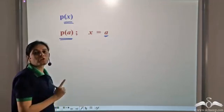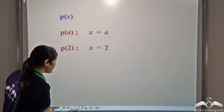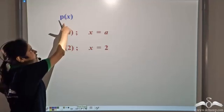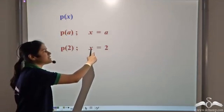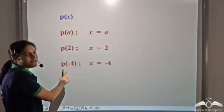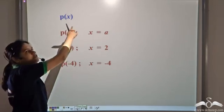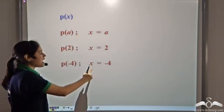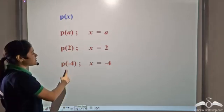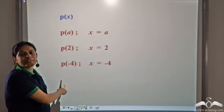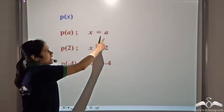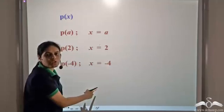Here 'a' is a constant. Similarly, P(2) denotes the value of P(x) at x equal to 2, and P(-4) denotes the value of P(x) at x equal to negative 4. These are simply the notations for P(x) evaluated at these constants.